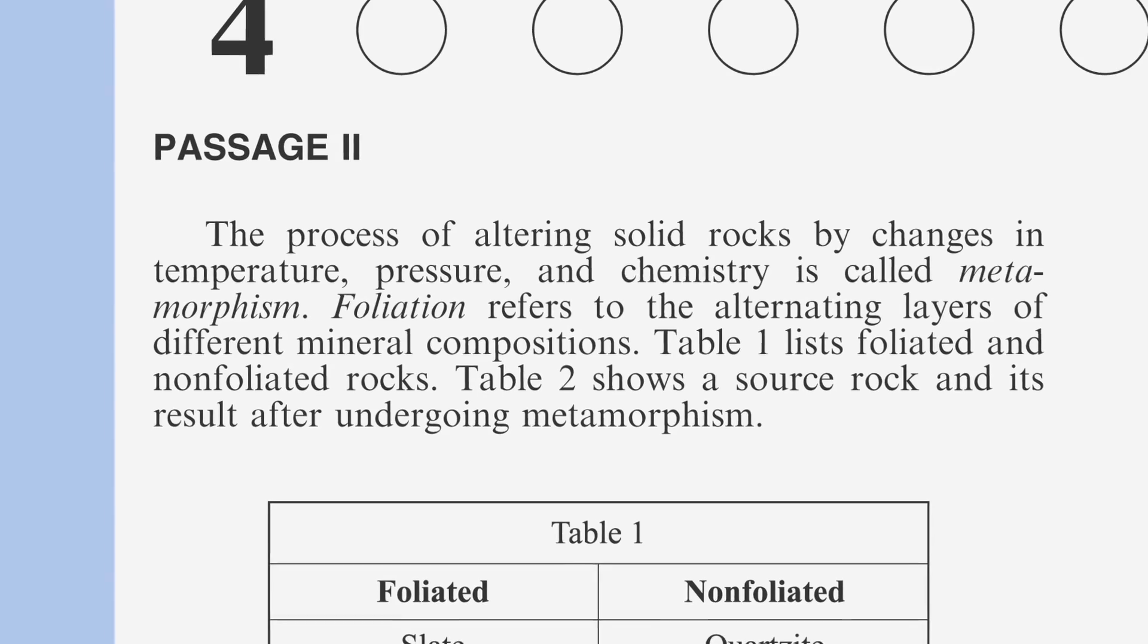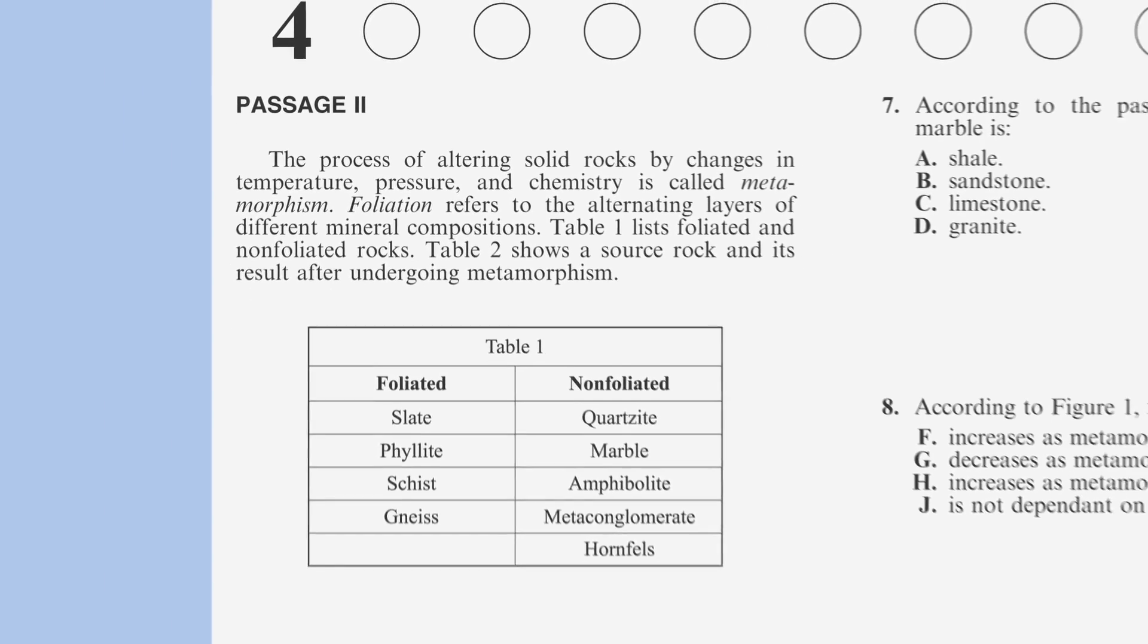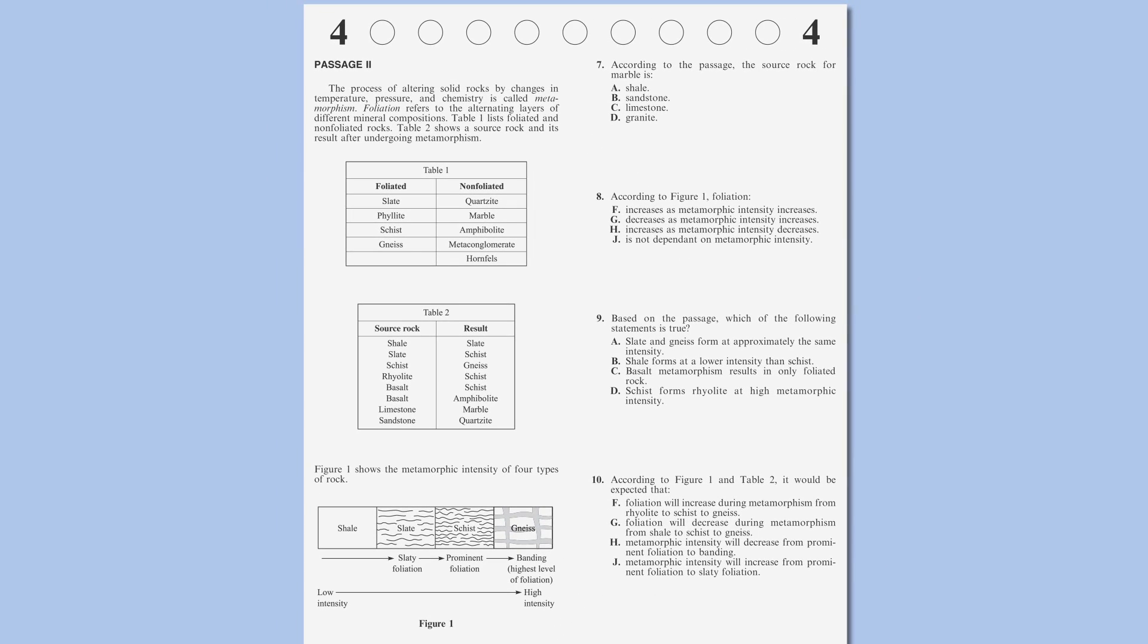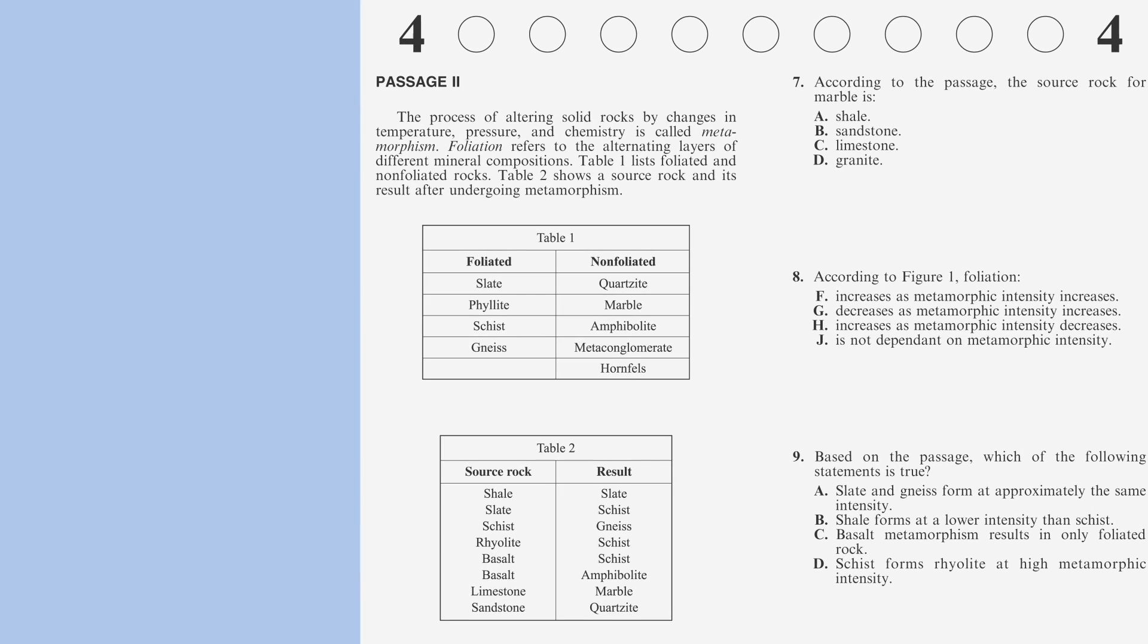Let's look at a real example and apply some of what we just covered. This passage provides a brief introduction followed by two tables and one figure. Because the passage is dominated by the tables and not text, we can assume this is a data representation passage, and we can skim or skip reading the passage until after we've read the questions.